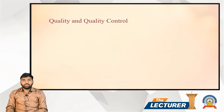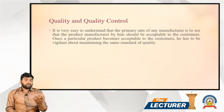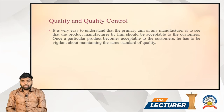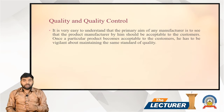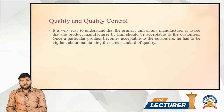It is very easy to understand that the primary aim of any manufacturer is to ensure that the product manufactured by them is acceptable to customers. The first main objective is to get the maximum number of profits, but they can only earn maximum profits when their product survives in the market, consumers are attracted to their product, and consumers consume it happily and satisfactorily.